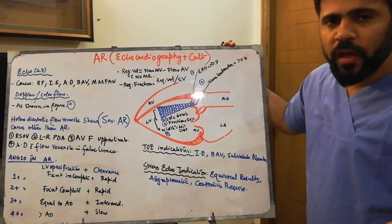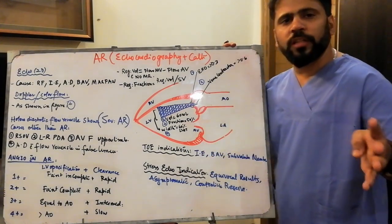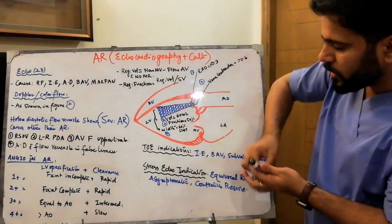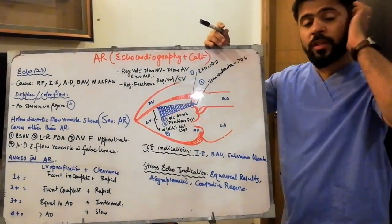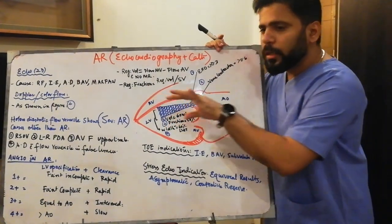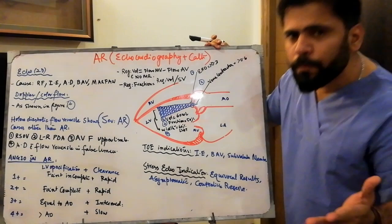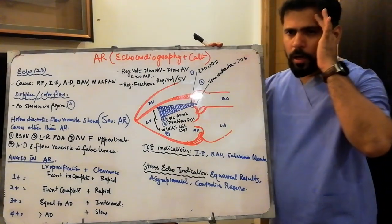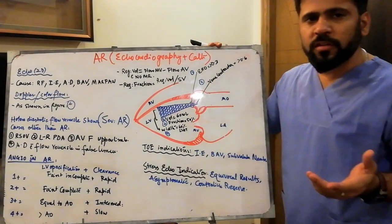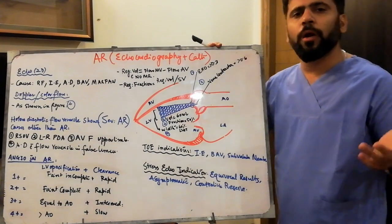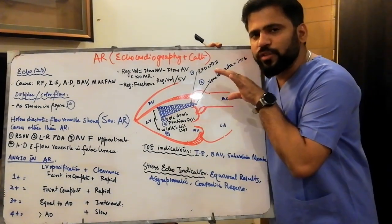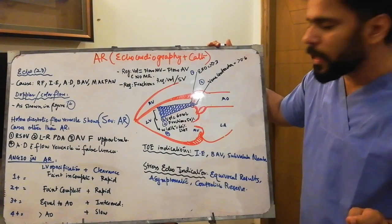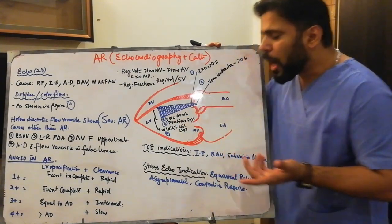The third parameter is jet width. If the jet width is more than 60% of the LVOT, it means your patient has severe AR. You can visually assess this, but measurements and calipers are available on the echo machine to quantify the jet width accurately. If the jet width exceeds 60% of the LVOT, you diagnose severe AR.